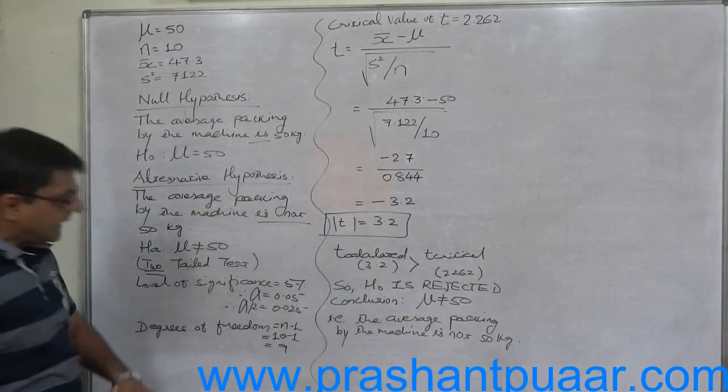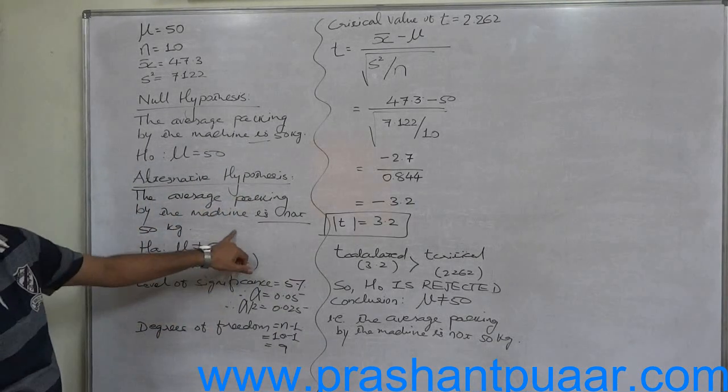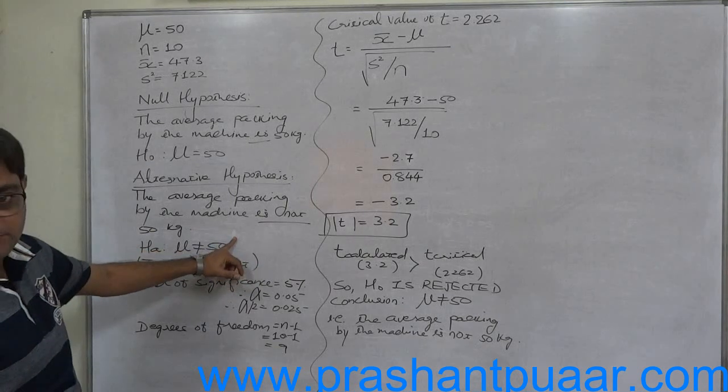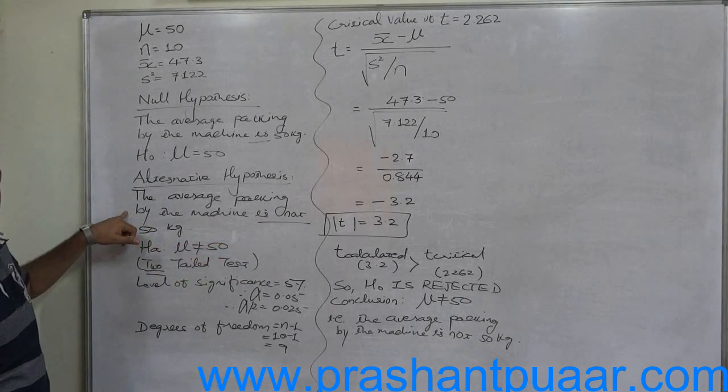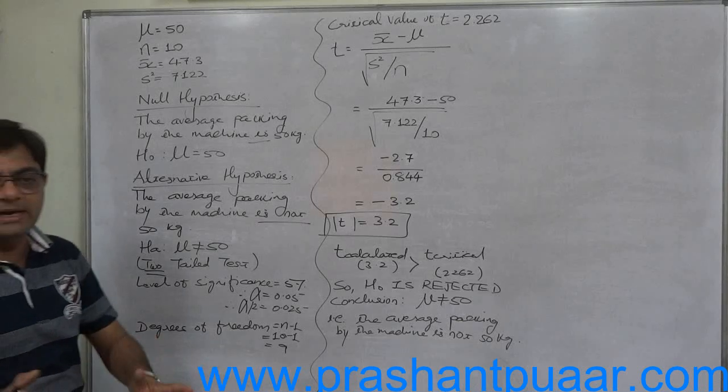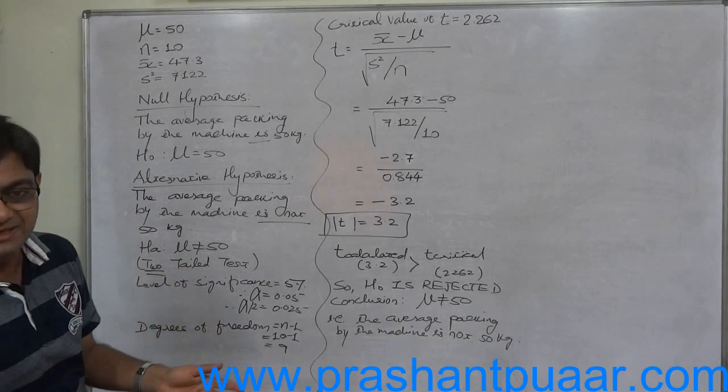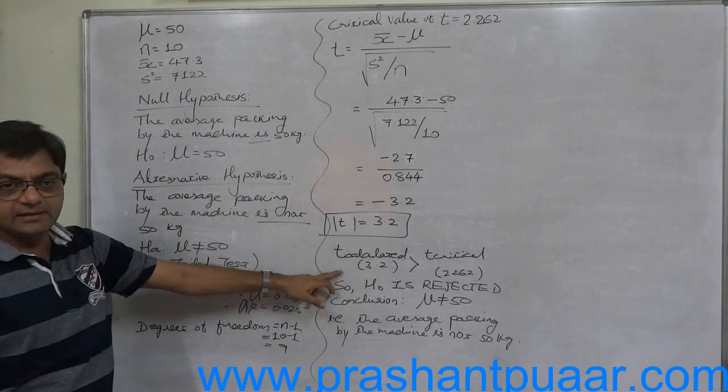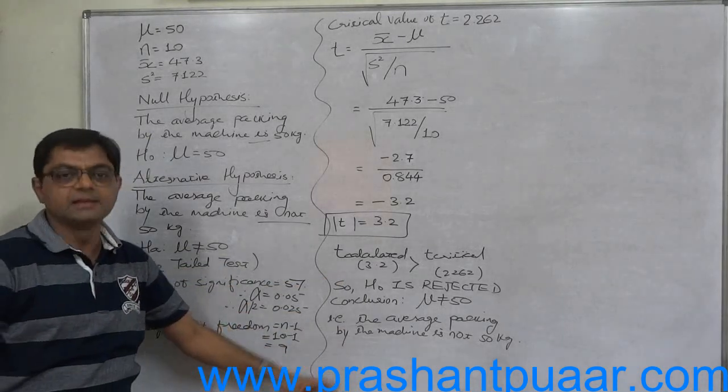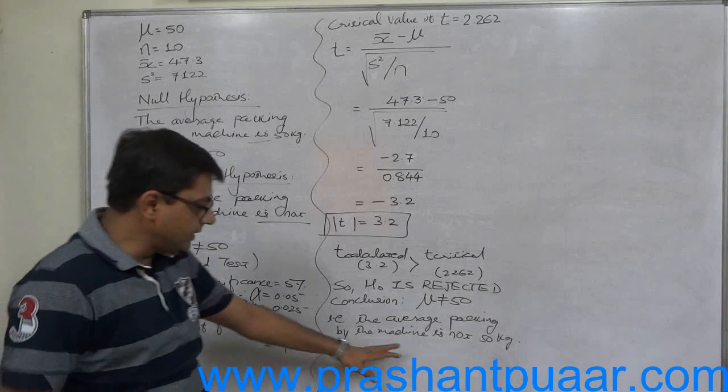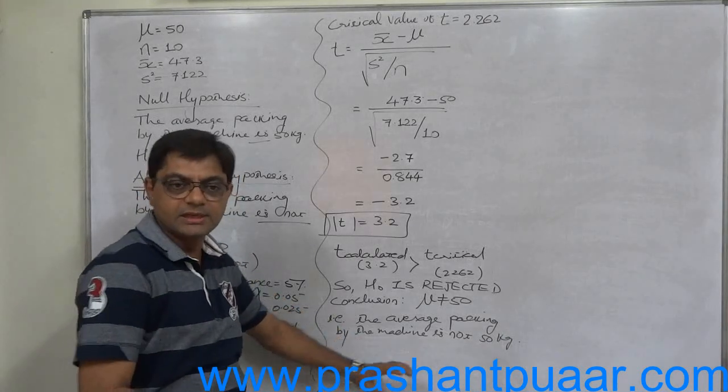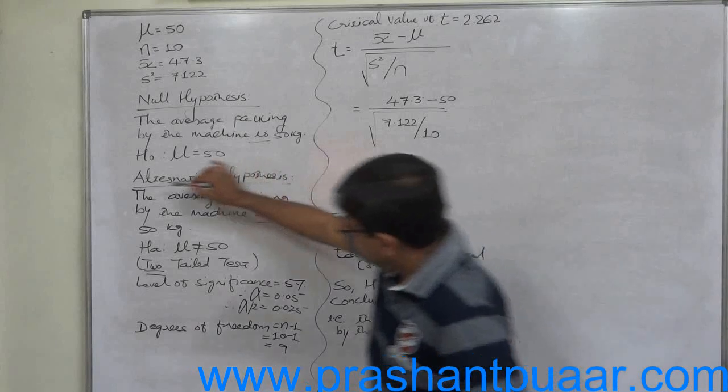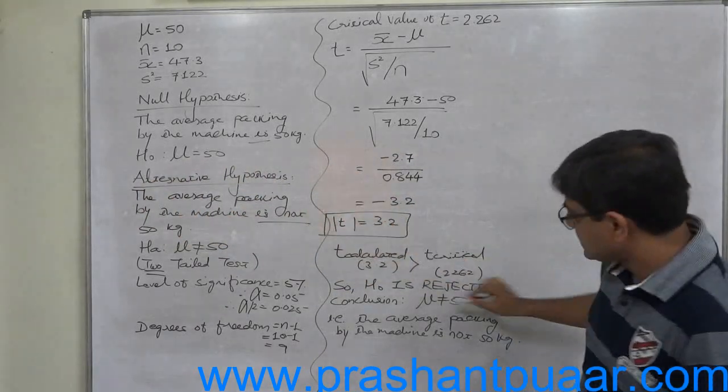Even the paper setter can turn this sum into a one-tailed test sum. The average size of packing by the machine is less than 50 kilograms. That type of alternative hypothesis can also be given in the same question. Can we conclude that the average size of packing by the machine is less than 50 kilograms? Yes, then H0 of 50 kilograms is rejected.